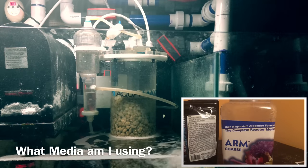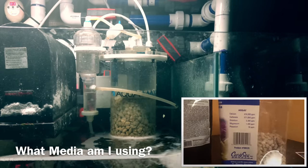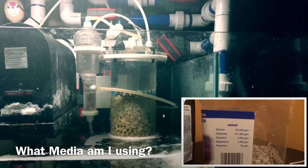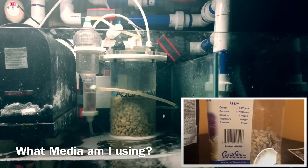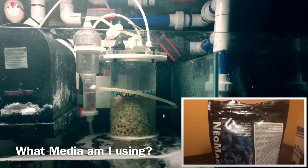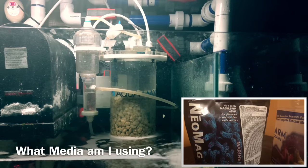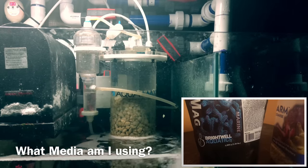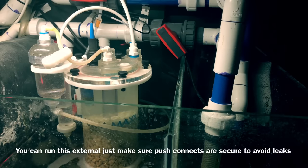When it comes to what's inside the reactor, I'm running two different types of media at this time. First is the coarse aragonite or ARM media, the second is the neomag. Between these two, the ultimate goal is for it to melt, break down, and release everything in equal parts that my tank needs related to the alkalinity, the calcium, the magnesium, trace elements, all released in a balanced manner so my corals can take it up easier.